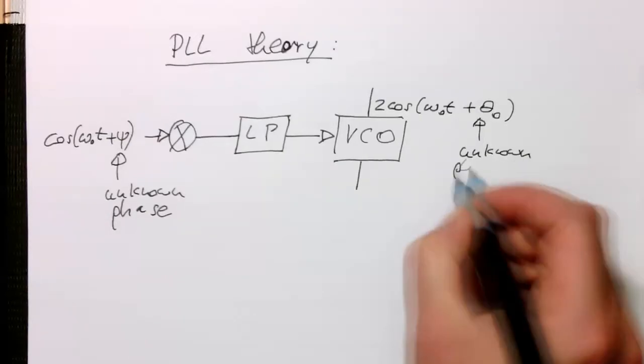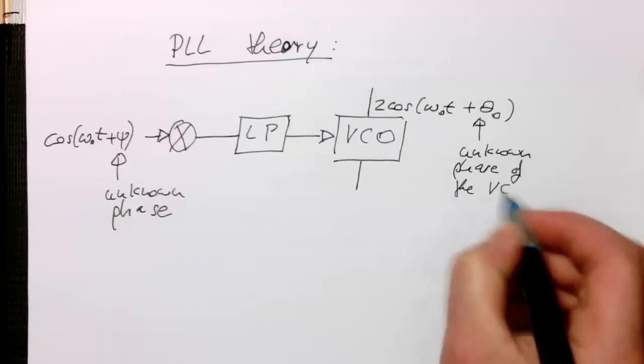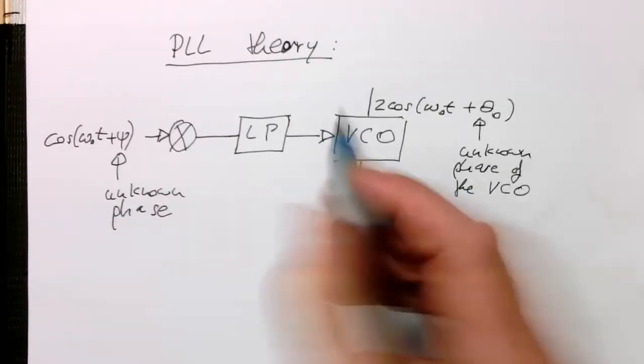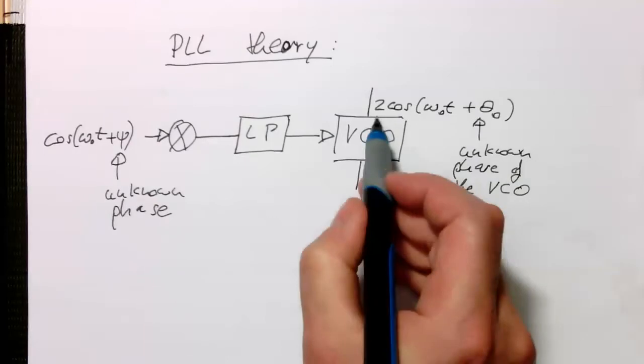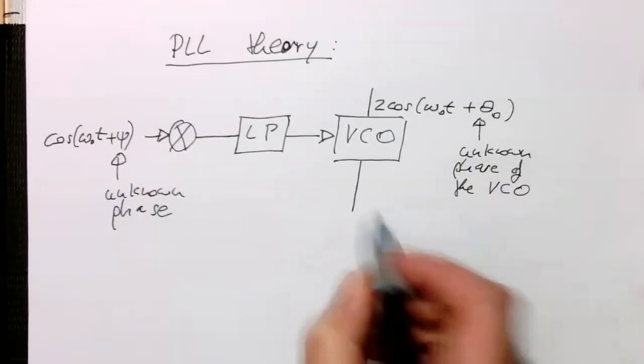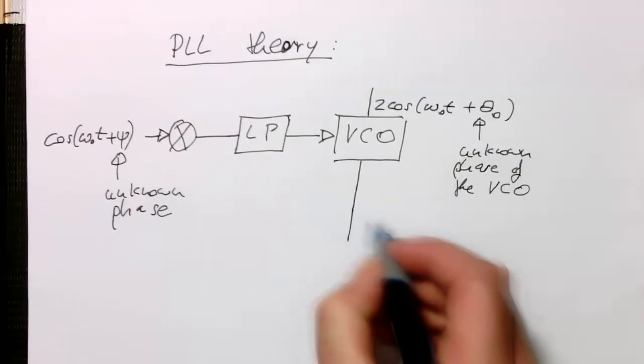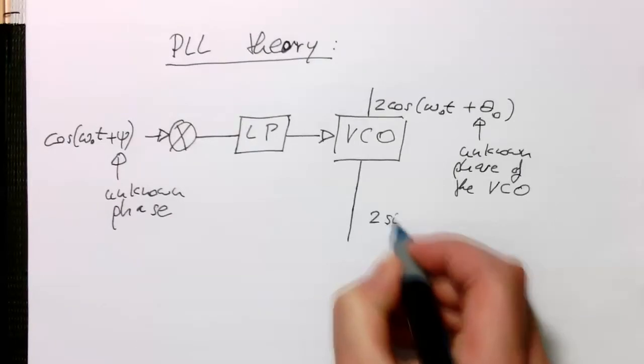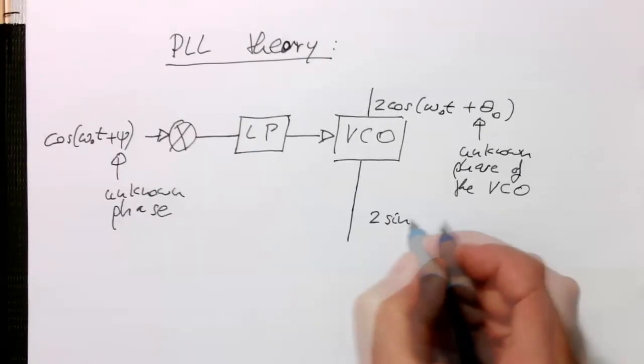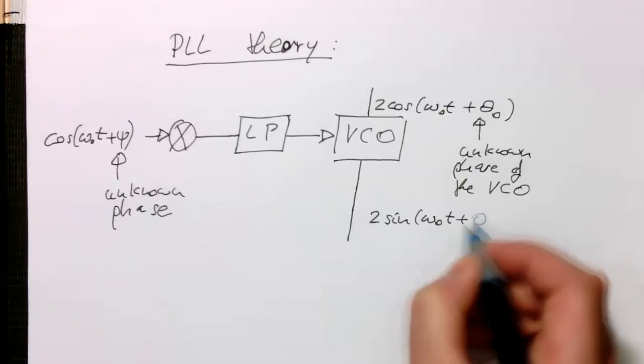That's the unknown phase of the VCO because also we don't know that. And the two is here just for our convenience. And so then the other output here of the VCO is two sine of omega zero t plus theta zero.